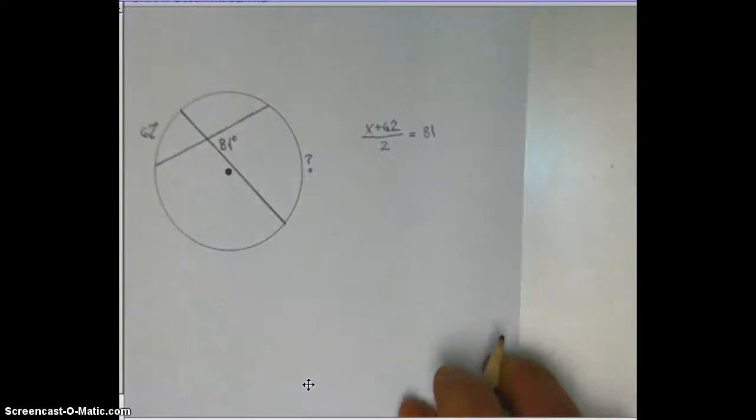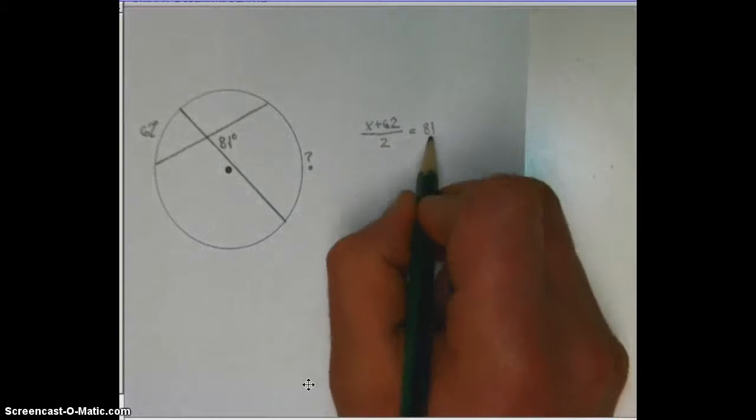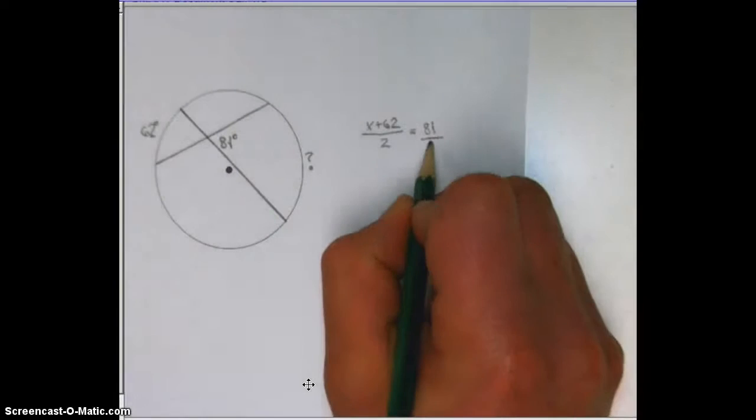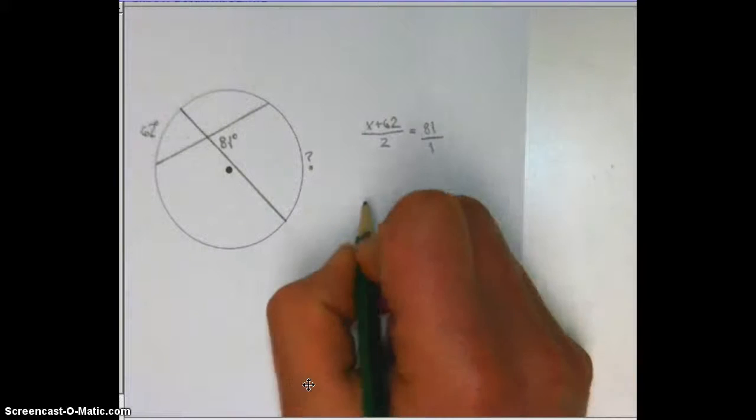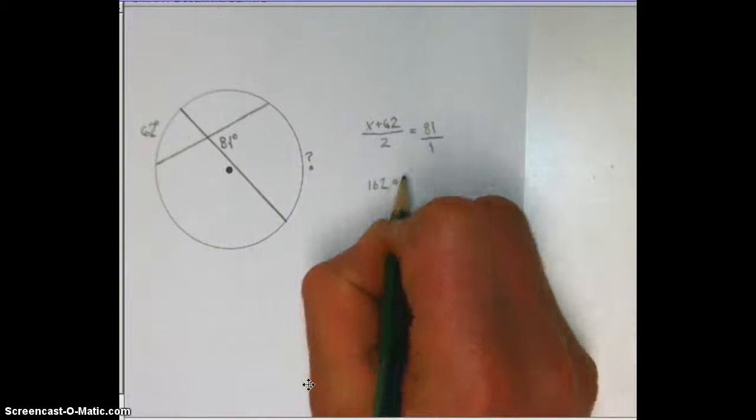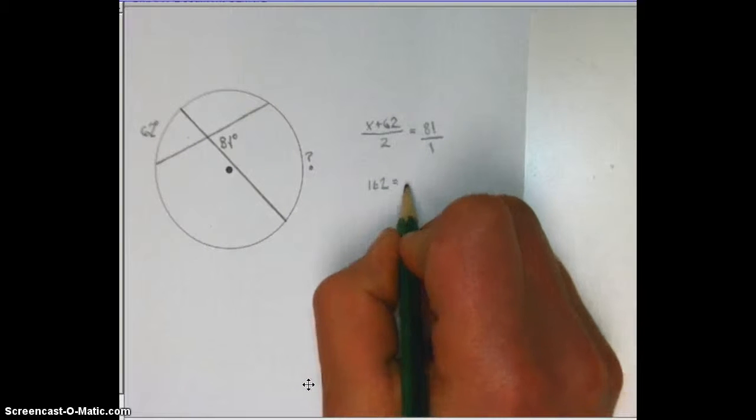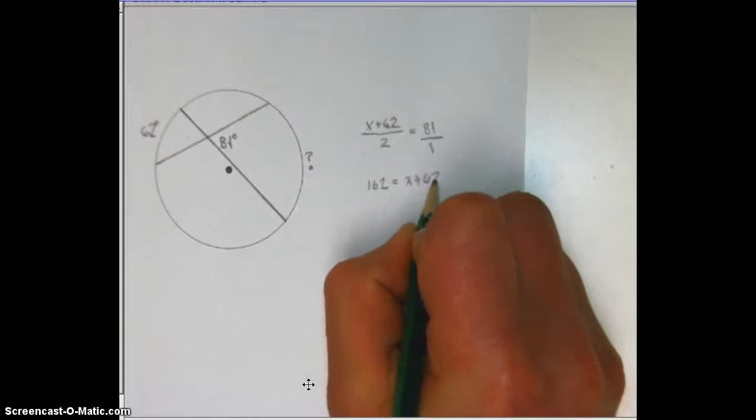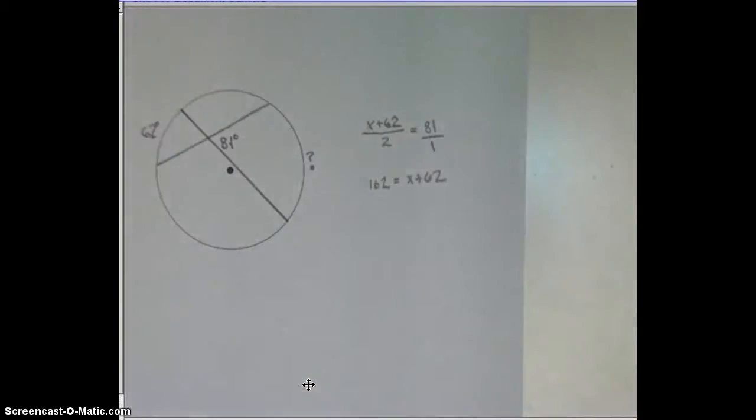And now we've got ourselves an equation, and all we need to do is cross-multiply and solve. So, you'd put this over one, and two times 81 is 162, and one times x plus 62 is x plus 62, and it's pretty easy from there.